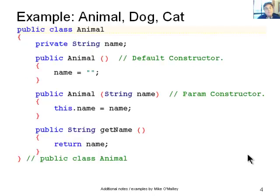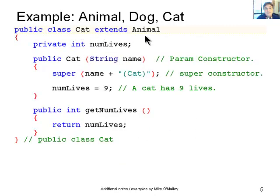So let's look at an example. We've got a little three-class hierarchy here. We've got Animal. It's got a single data item called name. We've got a default constructor, a parameterized constructor, and a getName method. Just keeping it short and simple. Then we've got a cat class which extends Animal. And the cat's got a number of lives.